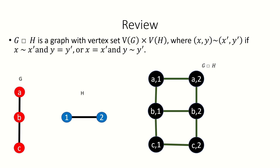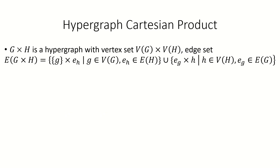So how can we generalize this to hypergraphs? Let's start by narrowing down the kinds of hypergraphs we're going to consider in this video. Unless otherwise stated, we're going to be considering hypergraphs without repeated or empty edges. The Cartesian product of hypergraphs G and H is a hypergraph with vertex set equal to the Cartesian product of the vertex sets of G and H, and with edge set equal to the union of the set of all ordered pairs whose left coordinates are the same and whose right coordinates form an edge in H, with the set of all ordered pairs whose right coordinates are the same and whose left coordinates form an edge in G.